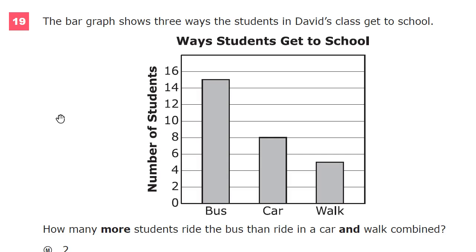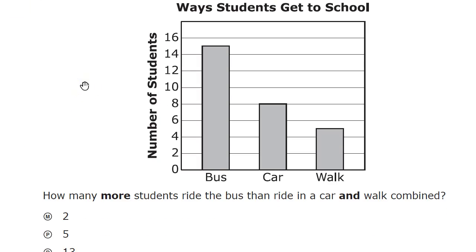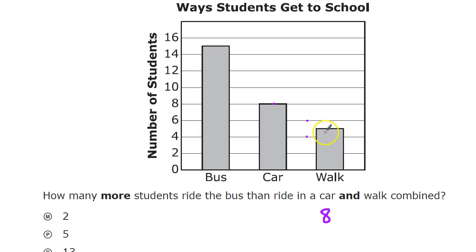Before I do anything else, I'm going to break down how many people do each thing. For the car, it's easy — they're right on the line, so I move over and it's an eight. For walk, it's a little more complicated. It's between four and six, so count: one, two, three, four, five, six. Since they're one apart each, the value in the middle is five.